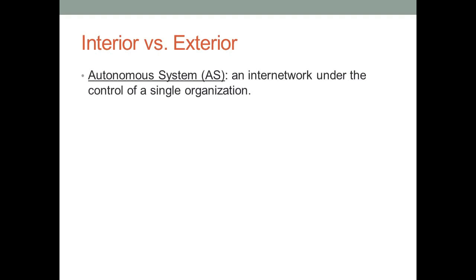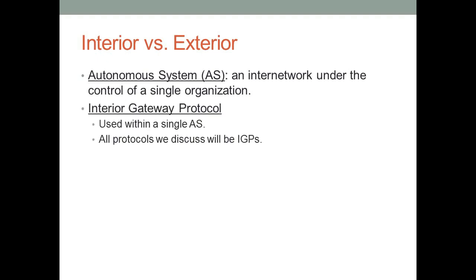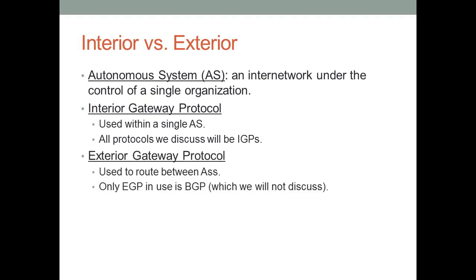First we need to talk about the term autonomous system. An autonomous system is basically a network under the control of a single organization — for example, AT&T, Cox, or Wichita State. An interior gateway protocol is used within a single autonomous system, and all the protocols we'll be discussing are IGPs. There's also an exterior gateway protocol used to route between different autonomous systems, and the only one used today is Border Gateway Protocol, BGP.